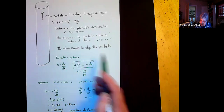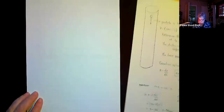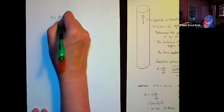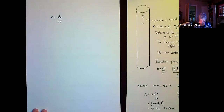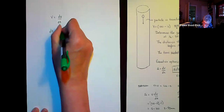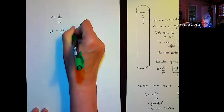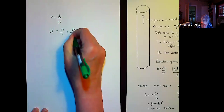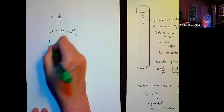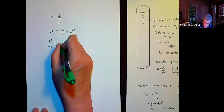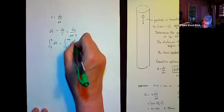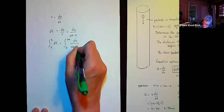Let's look at the last part: the time needed for the particle to stop. We're going to use velocity equals ds/dt and rearrange it, putting position on one side to get ds/v, which becomes ds divided by (100 minus s). We integrate from 0 to t on the time side, and from 0 to 100 on the position side, since we know the particle stops when it reaches s = 100.